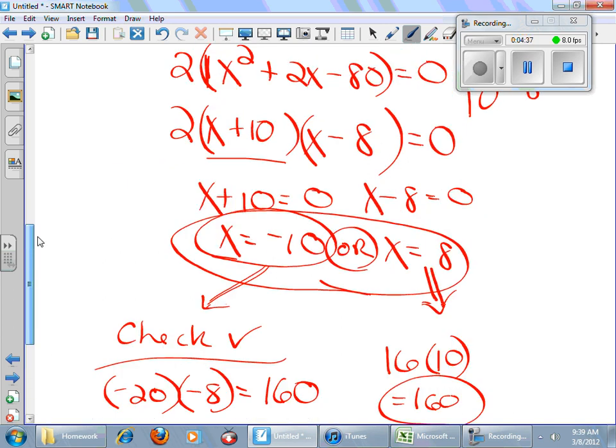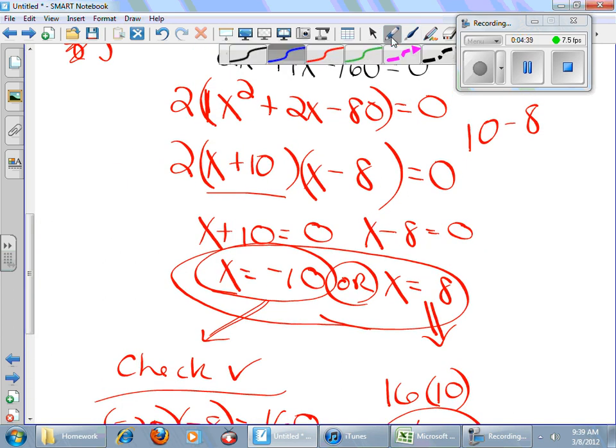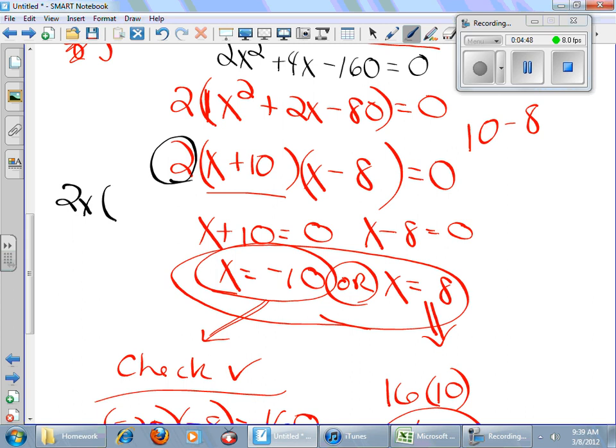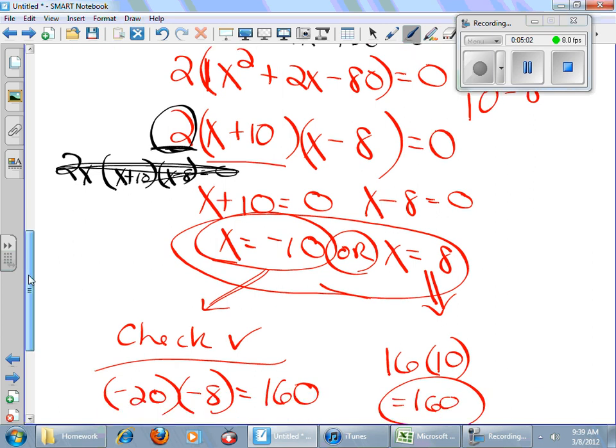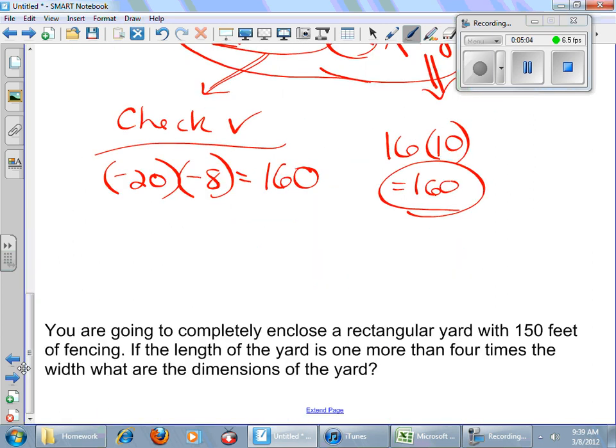By the way, if there had been a variable here, right here, I would have had three possible answers. Like if that had been 2x times the quantity, you know, x plus 10 and x minus 8 equals 0, I would have to do three answers, okay? But there's no variable here. Two can never equal 0 by itself. So I don't have to do that. All right. That's just a little side note. Okay. Let's look at this problem here.